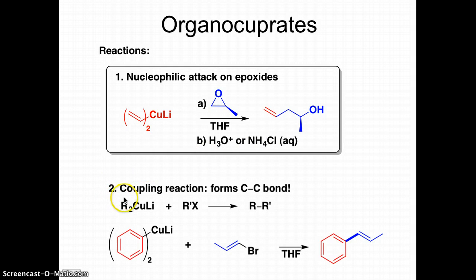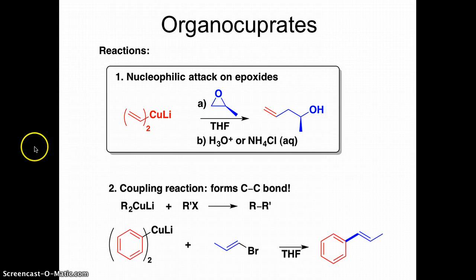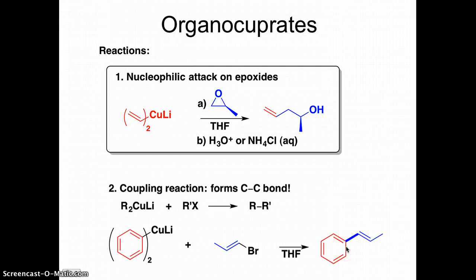The second reaction we can do is a coupling reaction that forms a carbon-carbon bond. We take the organocuprate and react it with another alkyl halide to form a carbon-carbon bond. You can take any two combinations and put them together this way. Cross-coupling chemistry is a whole field in itself, and chemists won the Nobel Prize for cross-coupling chemistry in recent years — it's one of the most widely used methods to form carbon-carbon bonds.